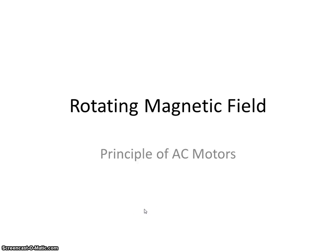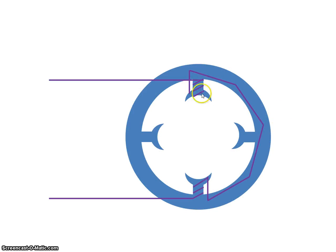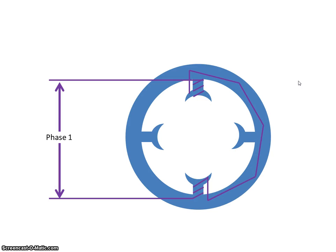In this screencast we're going to look at the principle of the AC motor, and in particular we're going to look at the rotating magnetic field. So if I have a stator of a motor and if I put some windings around it and I apply a phase like that.